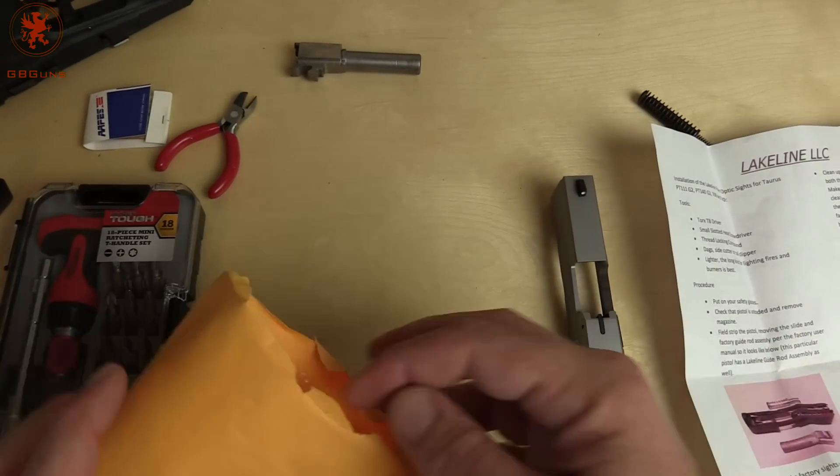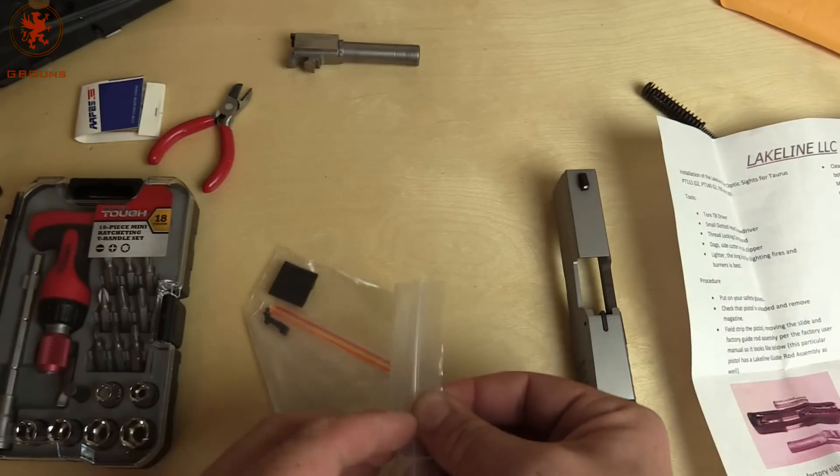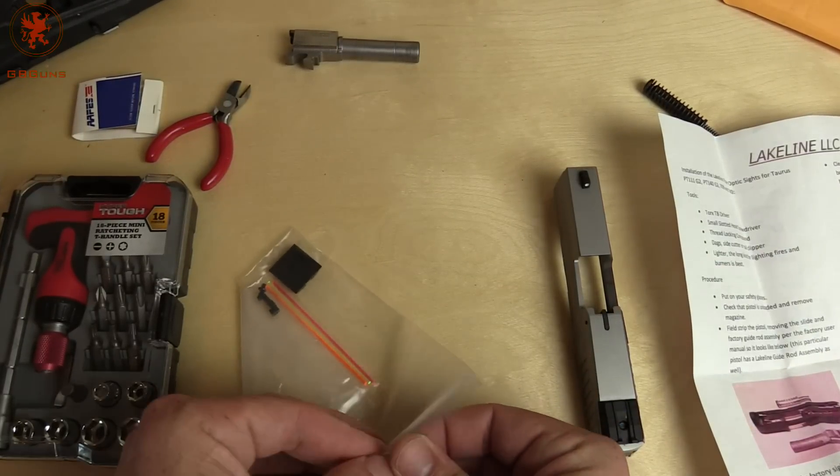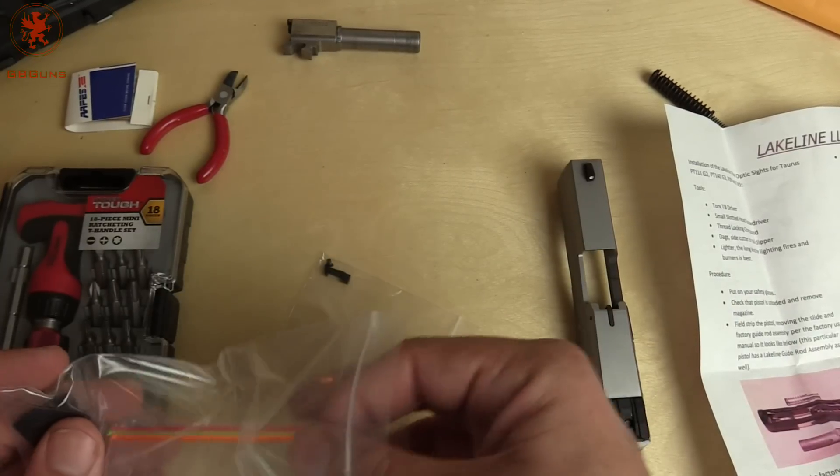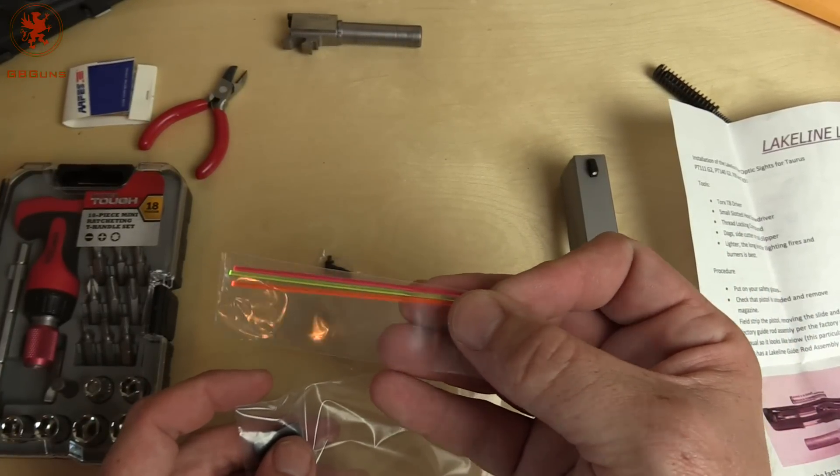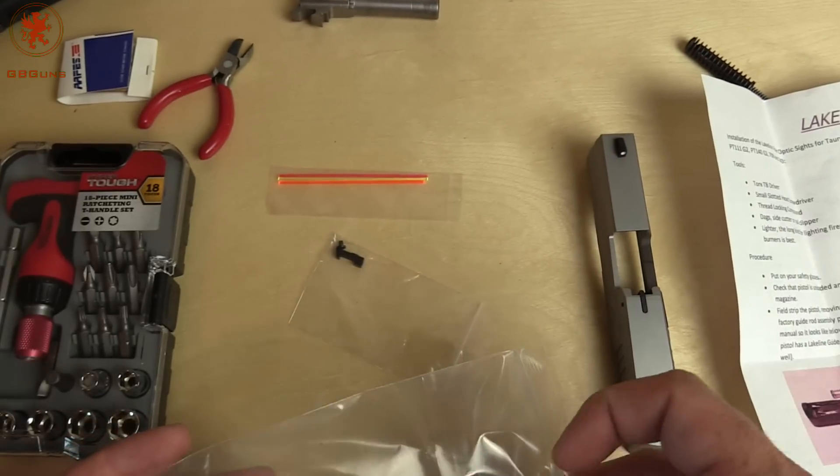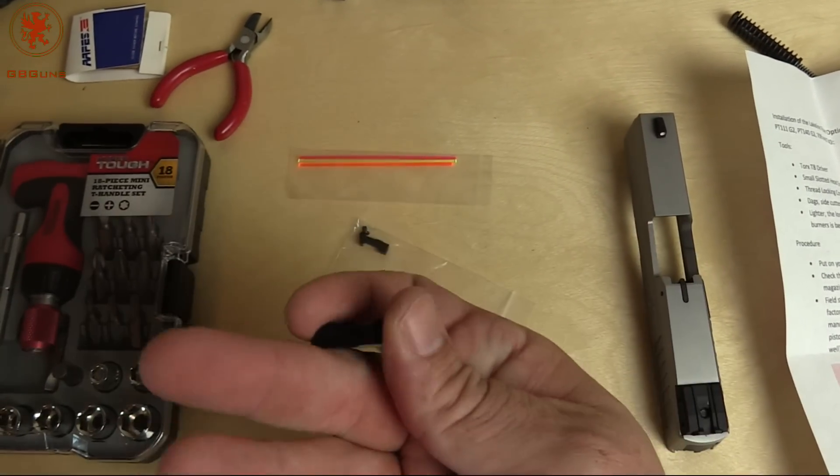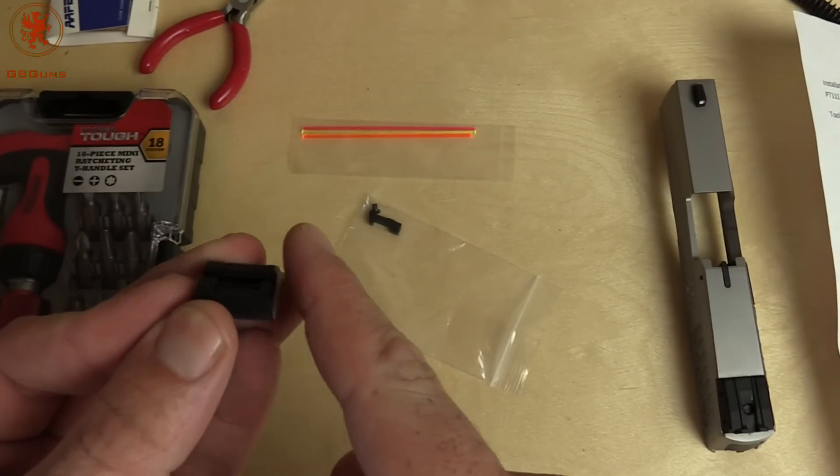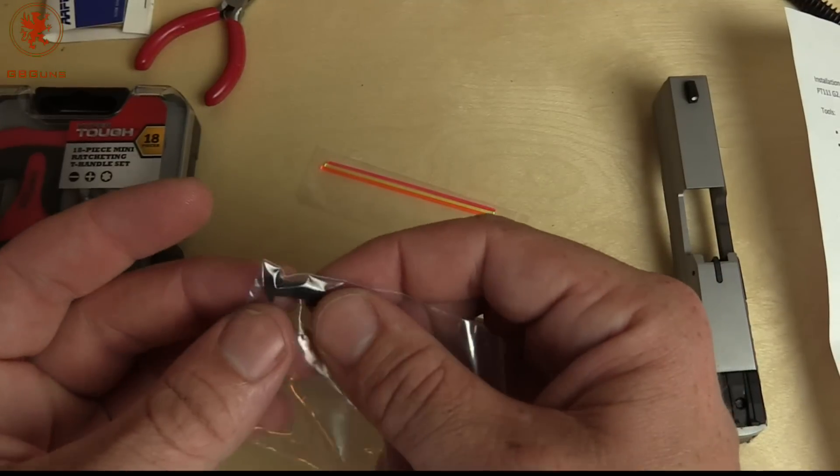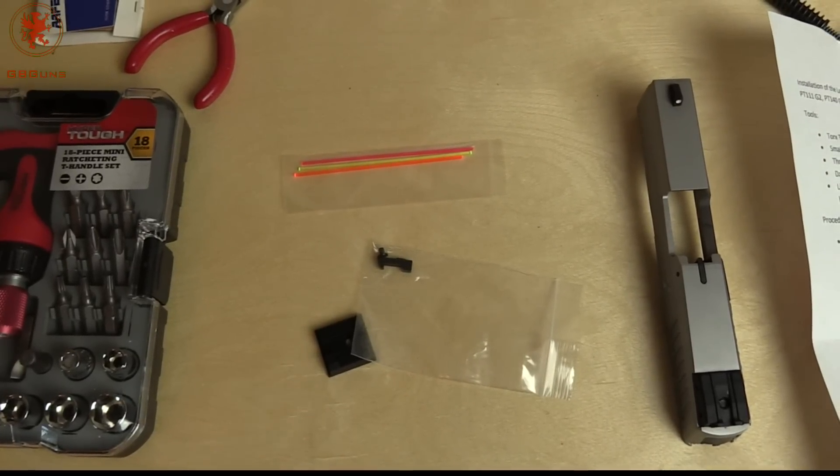So first thing we need to do. So that empties the package. We've got our three fiber optic pieces. Because you get to choose between an orangeish, a yellowish, and a reddish or pink is kind of what it looks like. As far as where you want them. The rear sight, notice it's got that nice flat edge you can use for charging the firearm if you need to be. Front sight and a replacement screw.